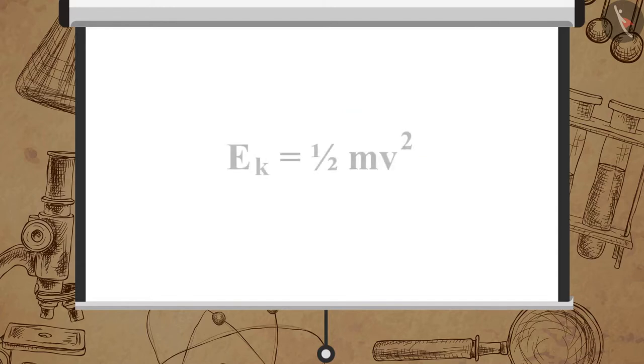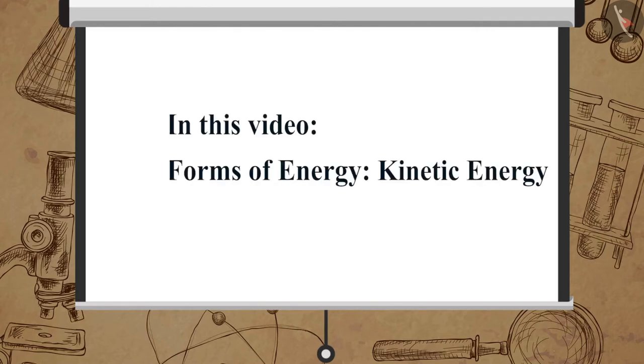Therefore kinetic energy possessed by an object of mass M and moving with uniform velocity V is given by Ek is equal to one-half M V square. In this video we learned about kinetic energy.